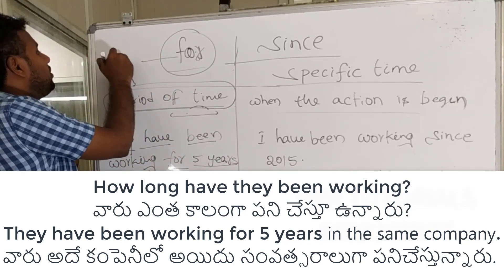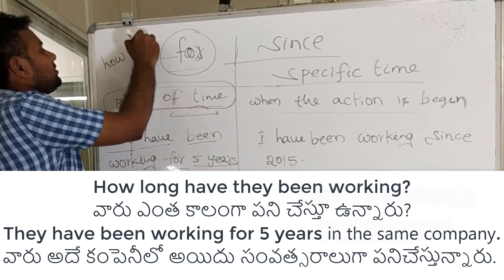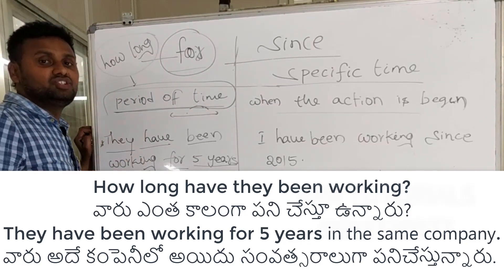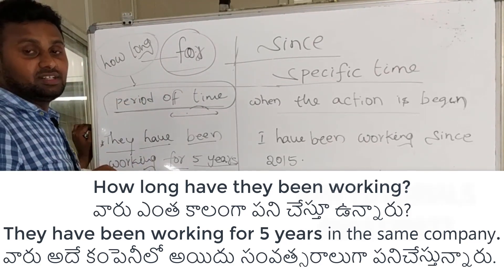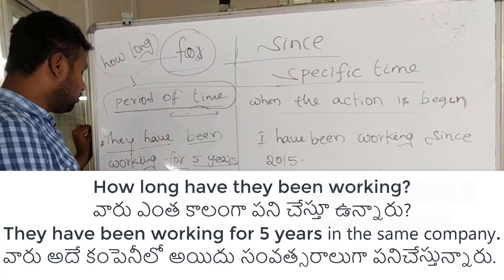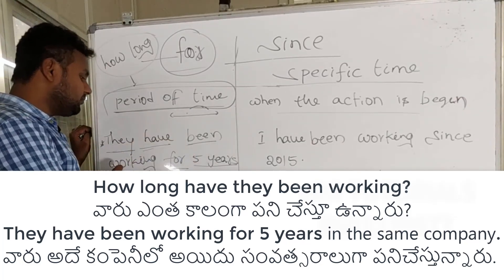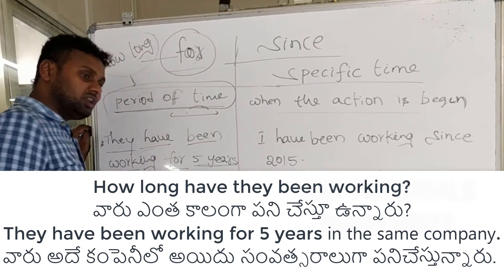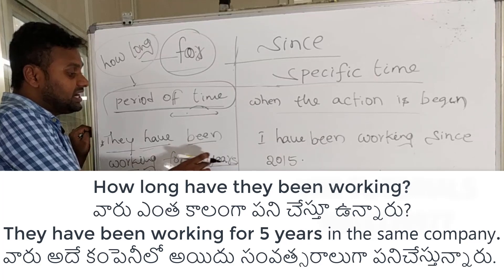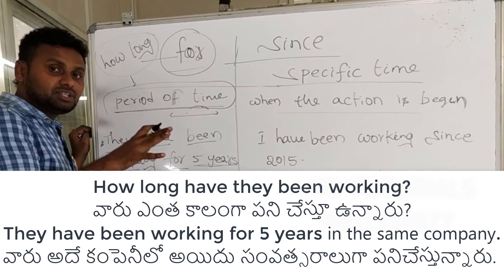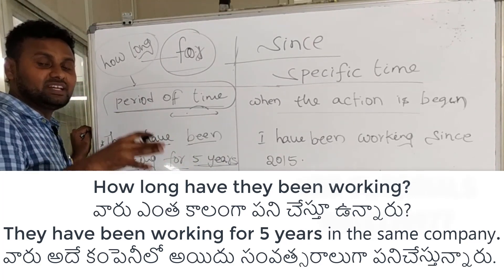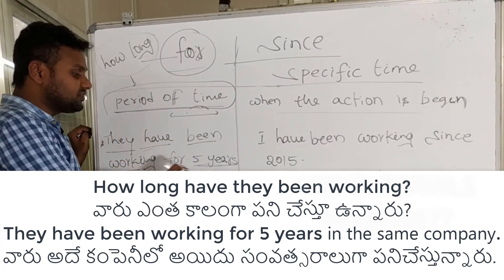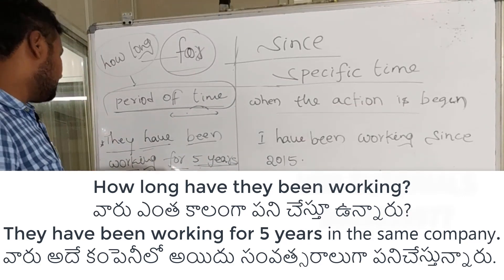'For' answers the question 'how long'. They have been working for five years in the same company. Five years is the period of time, so we use 'for five years'.